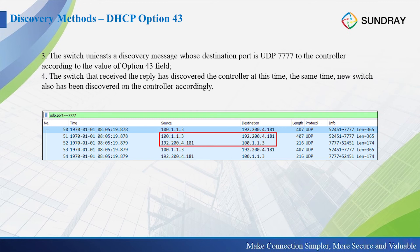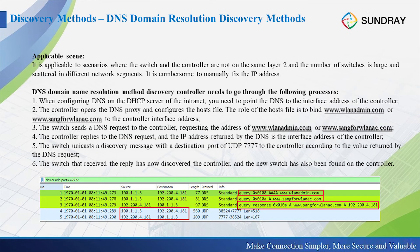The third method is DNS domain resolution discovery. For layer 3 environments, in addition to option 43, we can also use DNS domain resolution to discover the controller.